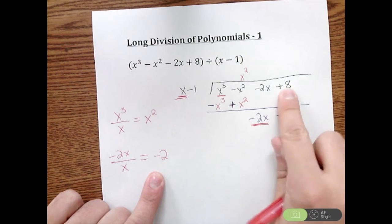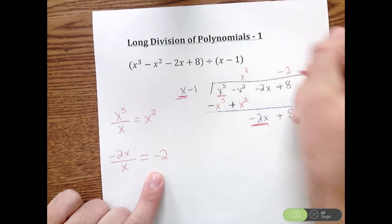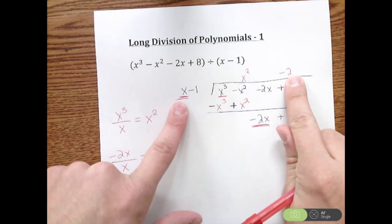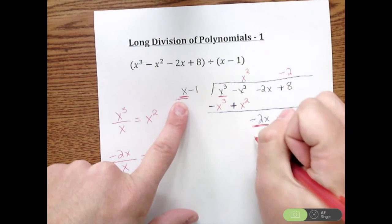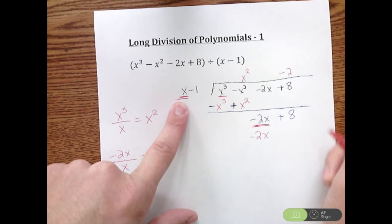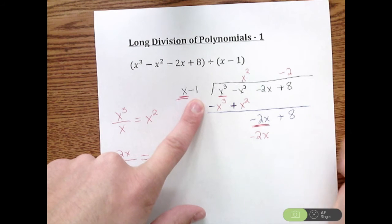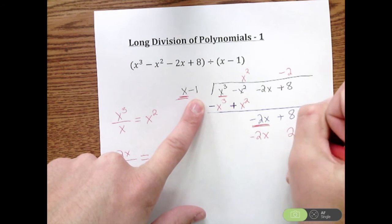Very similar process. Take that constant. I'm going to line it up with the constant right there. We're going to take that negative 2 and we're going to multiply through. Negative 2 times X is negative 2X. Negative 2 times negative 1 is positive 2. So I'm going to write my 2.